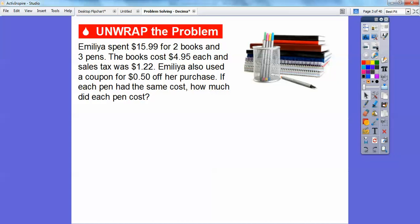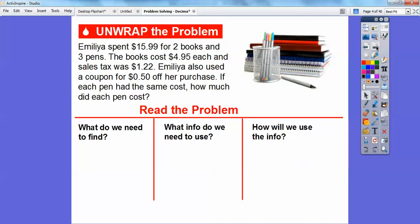Amelia spent $15.99 for two books and three pens. The books cost $4.95 each. Remember, there's two of them, so we're going to multiply that times two, and the sales tax was $1.22. Amelia also used a coupon for $0.50. Well, that's what we take off the price of her purchase. So if each pen had the same cost, how much did each pen cost? Remember, she bought three pens.